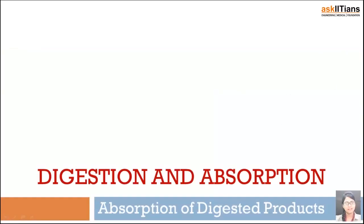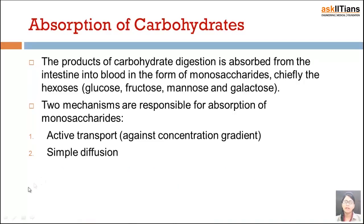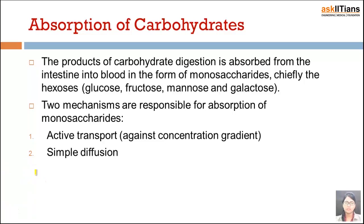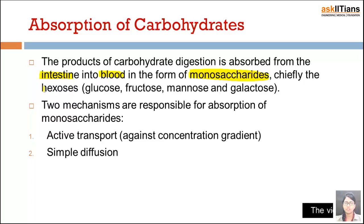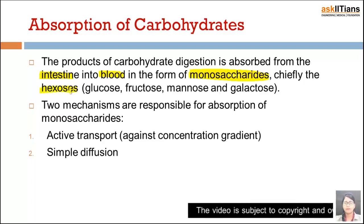Digestion and absorption — absorption of digested products. Absorption of carbohydrates is the first topic. The products of carbohydrate digestion are absorbed from the intestine into the blood in the form of monosaccharides. These monosaccharides are basically chiefly hexoses.